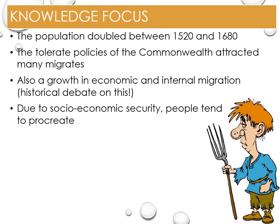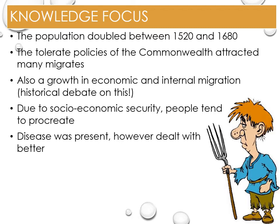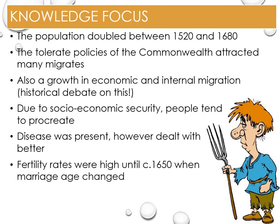As people in England began to feel more secure in their socioeconomic situation, people tended to procreate more. Though disease was ever present, it was dealt with much better via isolation, for example. Fertility rates were also higher around 1650. However, from around 1650, people began to wait longer to get married. In 1600, most women married between ages 24 and 26, meaning if they remained fertile they could give birth up to 15 times. However, by 1650 that age had increased to 26 to 28, reducing the possible offspring by two. This explains the change in population.